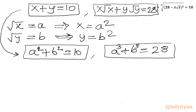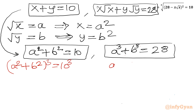Now we have a radical-free system and we need to find integer values of a and b. I will consider cubing the first equation (a² + b²)³, which gives 10³ = 1000 on the RHS, and squaring the second equation to collect a⁶ plus b⁶ on the left-hand side.